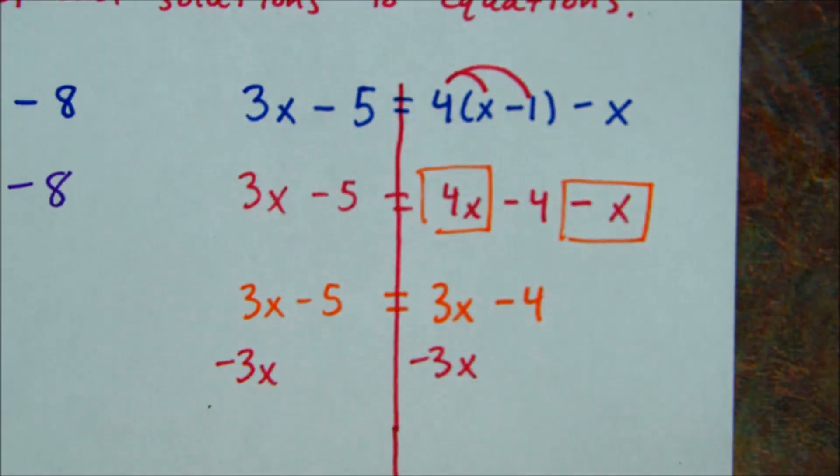Following my foldable, the next thing I need to do is combine like terms on the same side. Nothing can combine here. But over here, I've got a 4x and a minus x. So that combines to give us 3x minus 4. And then over here, I have 3x minus 5. Now, kind of the same thing has happened as last time. I have 3x on both sides. So I'm going to move 3x. So minus 3x minus 3x. This cancels. This cancels. And what I'm left with is negative 5 equals negative 4.